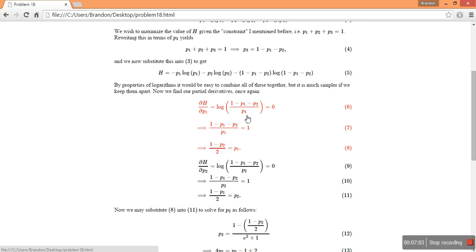And we set them equal to zero because we want to find our critical points. And then we take the exponential of either side and we find that e to the zero is 1.